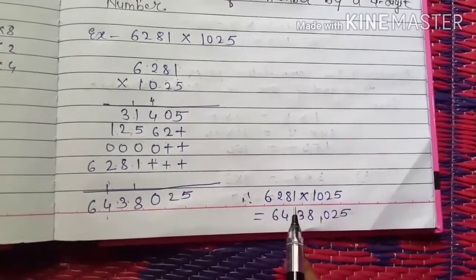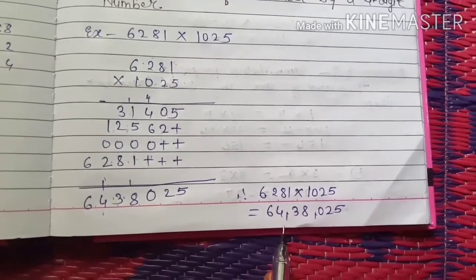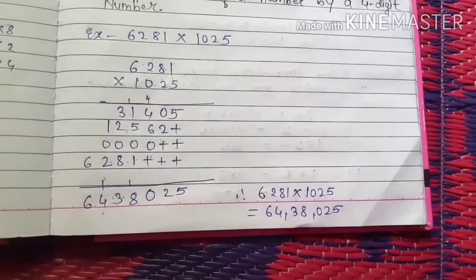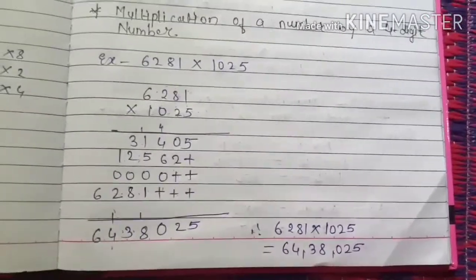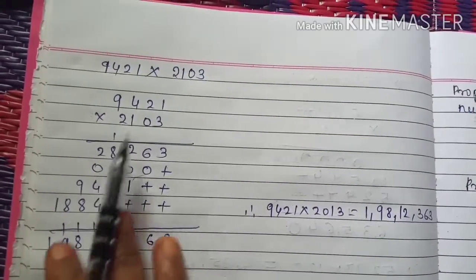So the answer is when 6281 is multiplied by 1025, we will get 64 lakhs 38,025 as an answer. So let's take one more example.